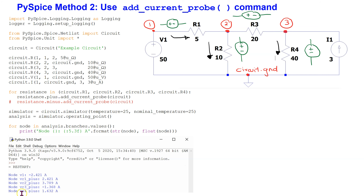Finally, for resistor R3, the current is minus 1.368 amps and is flowing from the positive to the negative terminal in this direction. The negative sign means that in reality the current is flowing in the opposite direction. Thus, the direction of current through R3 is as marked and this has magnitude 1.368 amps. If we were to use the resistance-minus-add-current-probe command, then the polarity of these reference voltage sources would be reversed and we would need to adjust our interpretation accordingly.